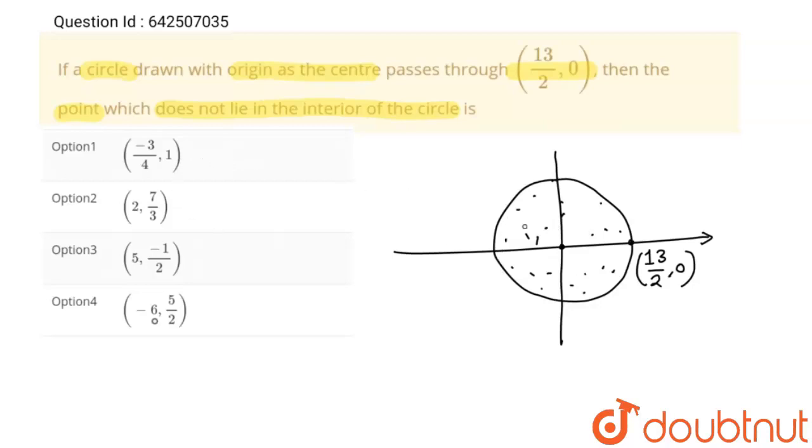The point which does not lie inside the circle will lie outside or on the circle. It means that if we find the distance of points, in both situations, that distance d will be greater than or equal to r. So we will find the distance of all four points from the origin.